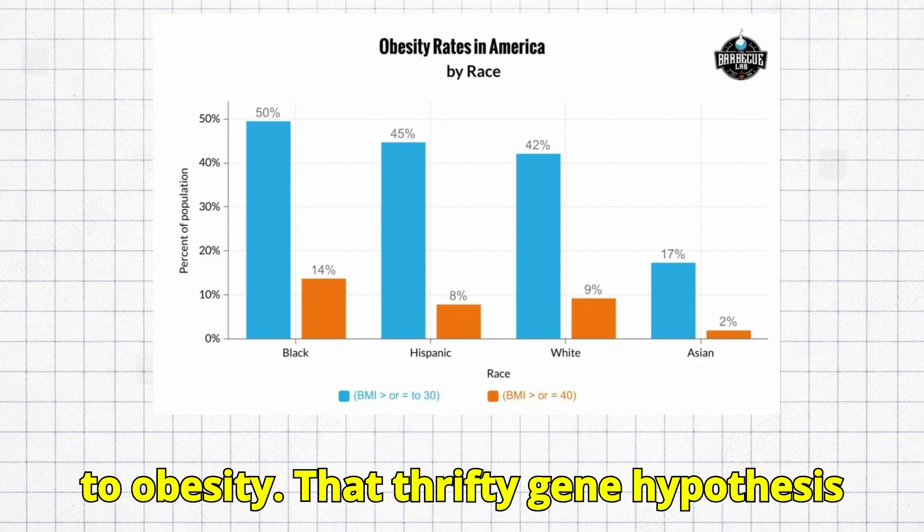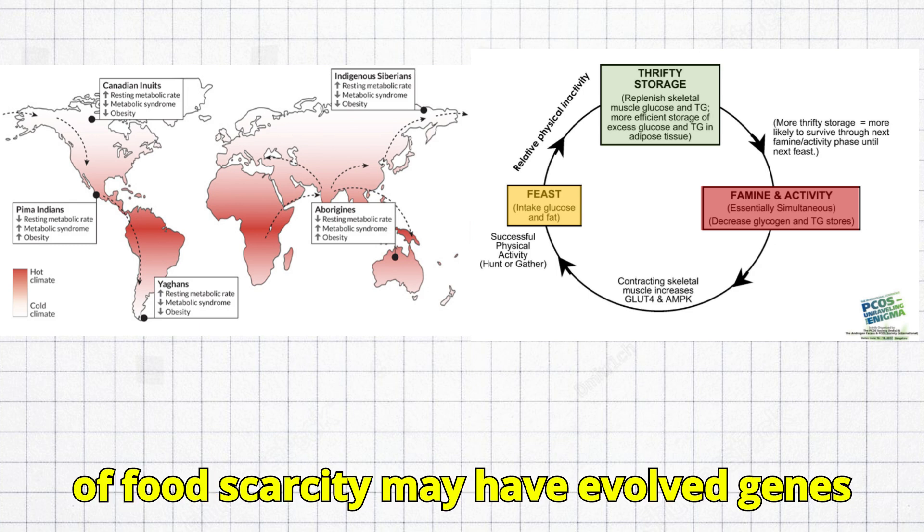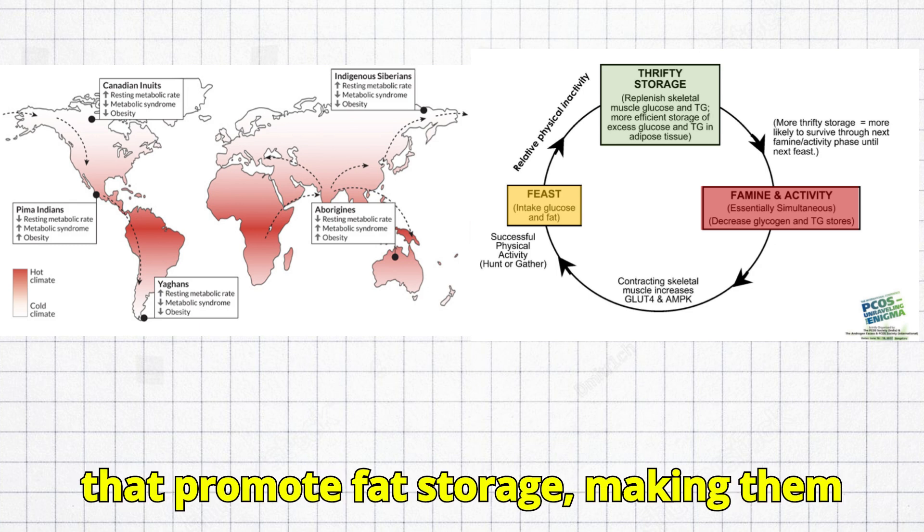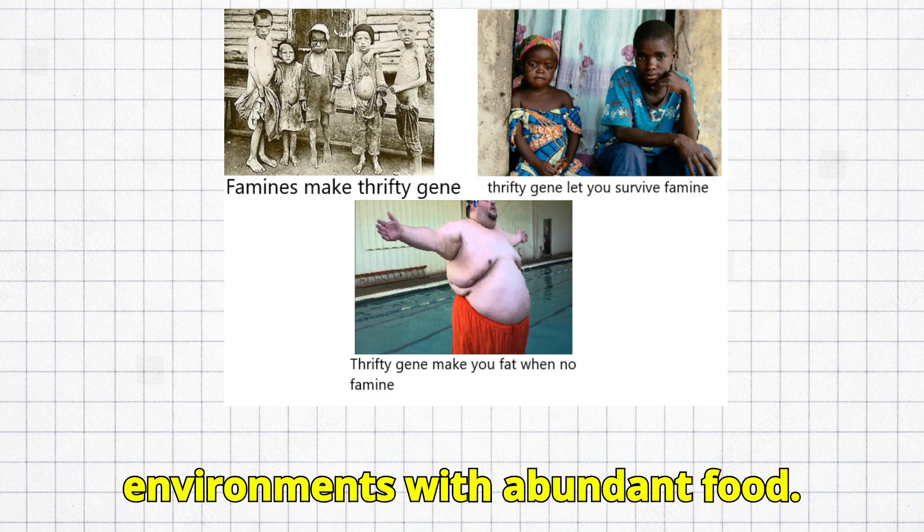The thrifty gene hypothesis suggests that populations with a history of food scarcity may have evolved genes that promote fat storage, making them more susceptible to obesity in modern environments with abundant food.